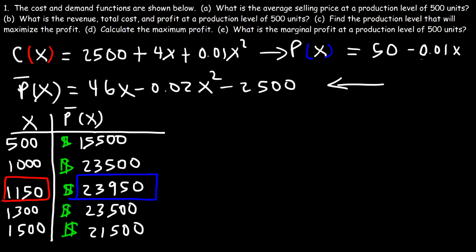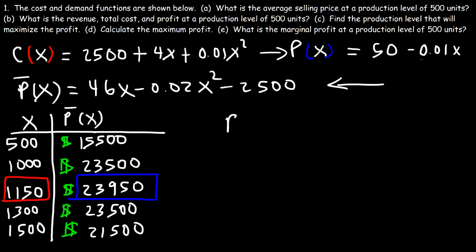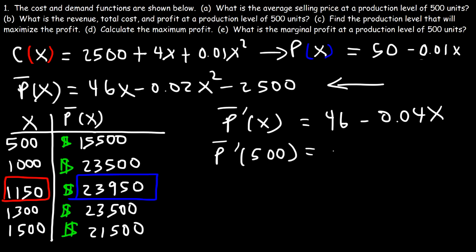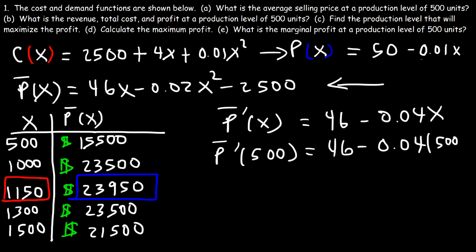Now let's move on to Part D: what is the marginal profit at a production level of 500 units? The marginal profit is the derivative of the profit function, which we found to be 46 minus 0.04x. Note that the marginal profit at x = 1150 equals zero, since that's the maximum — any time you find a maximum, the first derivative must equal zero. Calculating at 500: 46 minus 0.04 times 500 equals 26 dollars per unit.